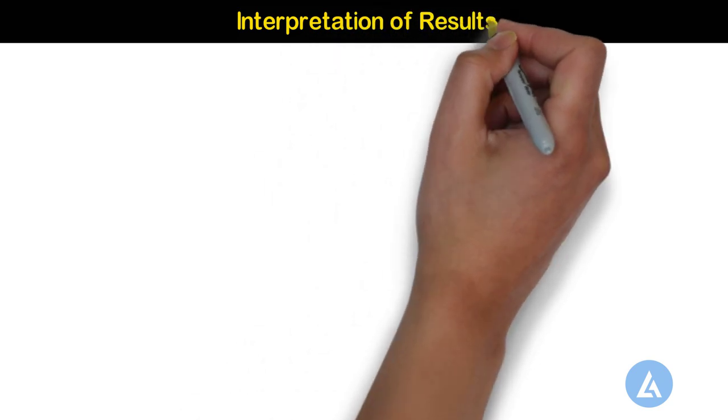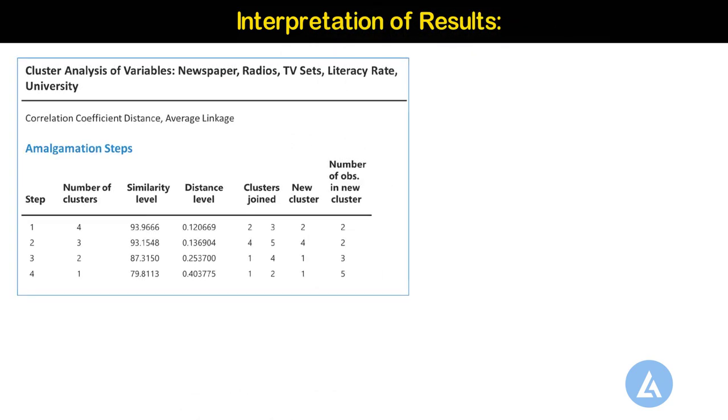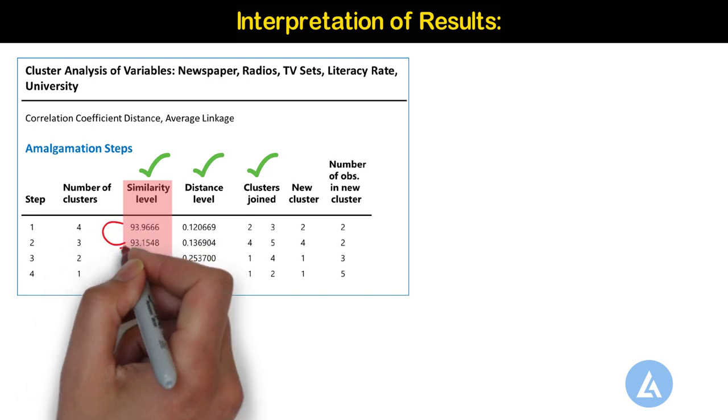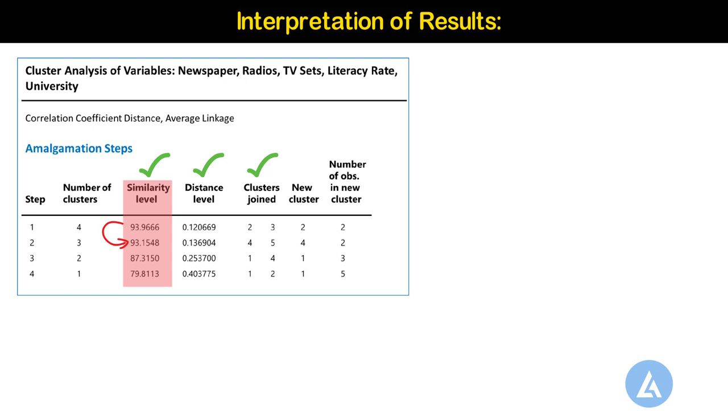Interpretation of results. The table shows the clusters that were joined at each step, the distance between the cluster, and the similarity of the clusters. The similarity level decreases slightly from Step 1, 93.9666, to Step 2, 93.1548, then decreases suddenly in Step 3, 87.3150, when the number of clusters changes from 3 to 2.